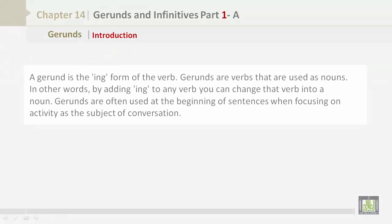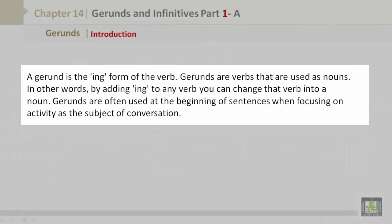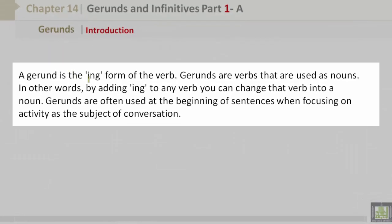Introduction. Let's understand what a gerund is first. A gerund is the ing form of the verb. Gerunds are verbs that are used as nouns. In other words, by adding ing to any verb, you can change the verb into a noun.